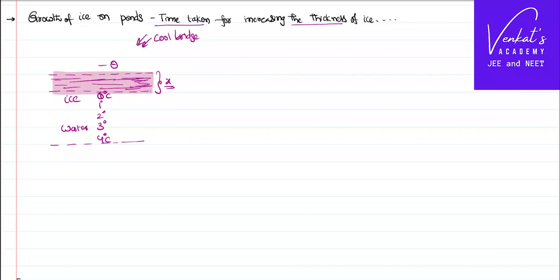So we can say dq/dt, rate of flow of heat, is kA times delta theta, the difference between the temperature. Here the temperature is 0 degrees centigrade at the bottom minus minus theta at the top. So kA delta theta by L, where L is the thickness of the ice formed. I have called the thickness of ice formed as x. dq equal to this much.